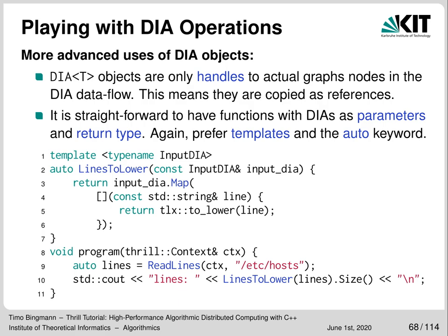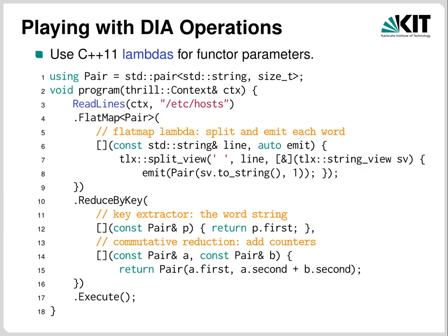The DIAs in the code are actually only handles to the real DIAs inside the data flow graph — you can copy, assign and return these DIAs without any processing cost. You can pass DIAs as template parameters, which is the same as using auto. The easiest way to write small functions needed for the many parameters of DIA operations is to use lambdas. Here it does not matter if you use explicit types or the auto keyword, though I use explicit types most of the time despite them often generating template error messages until you get them right.